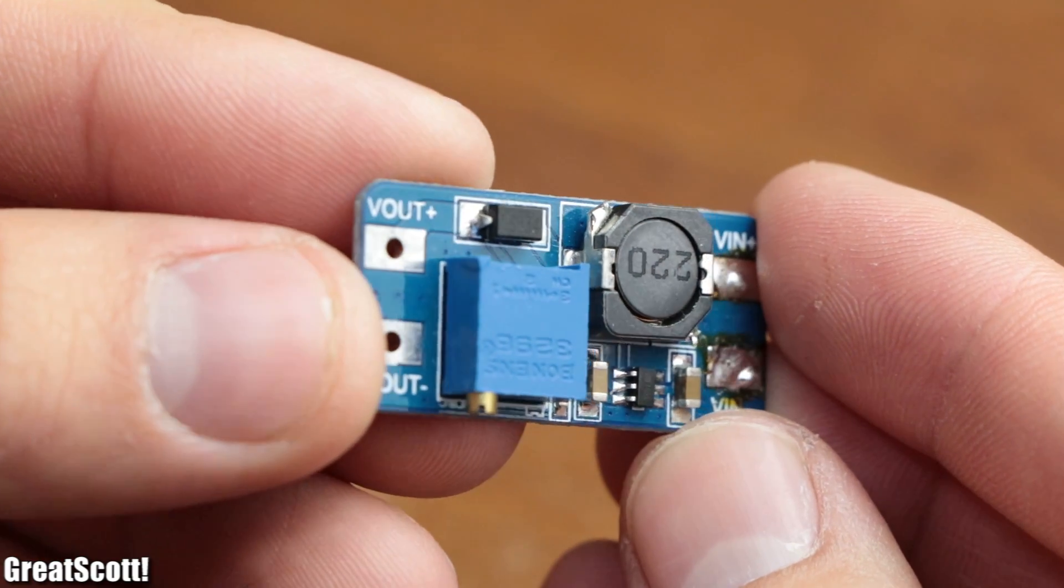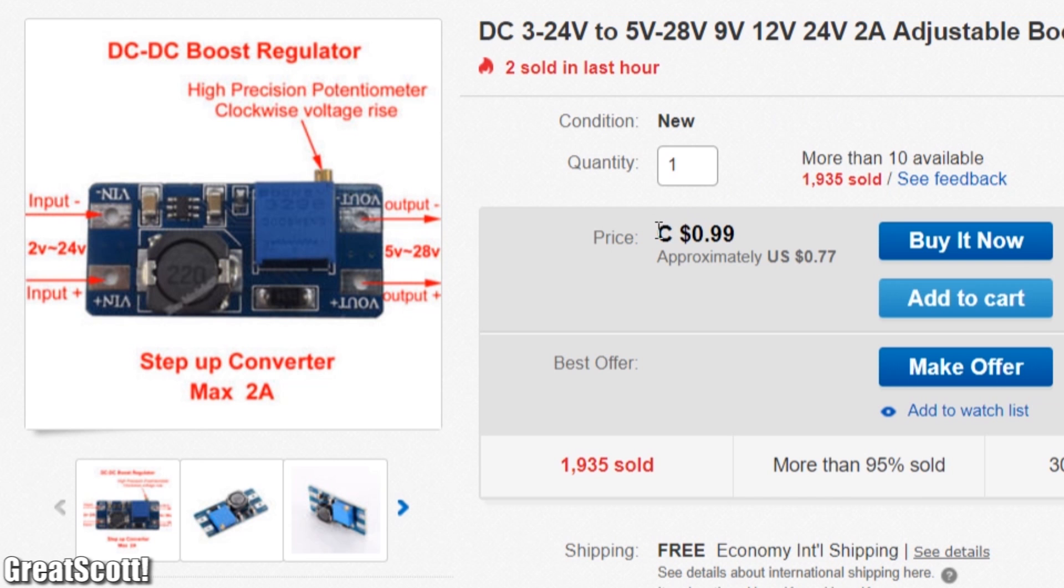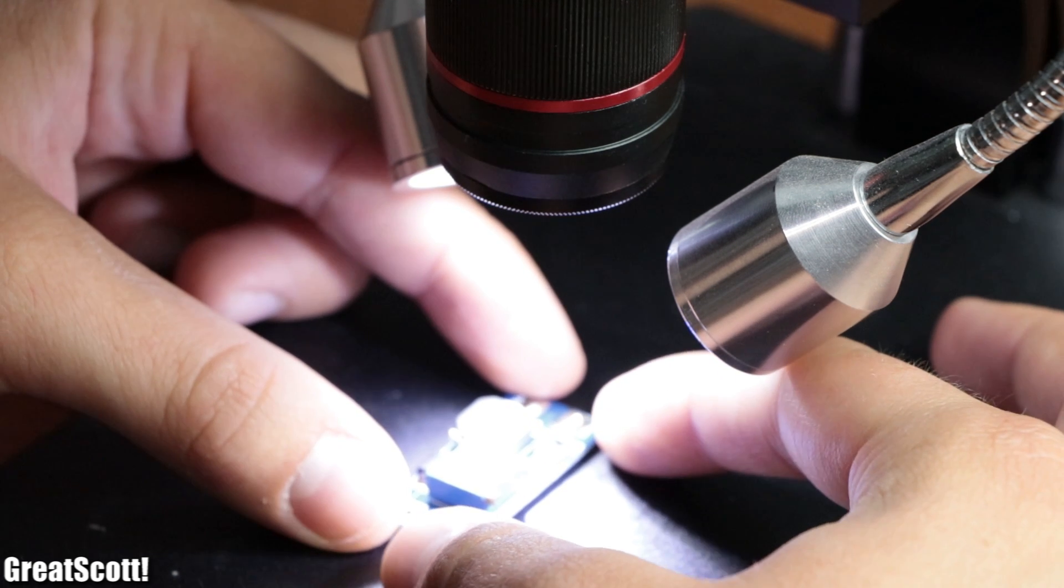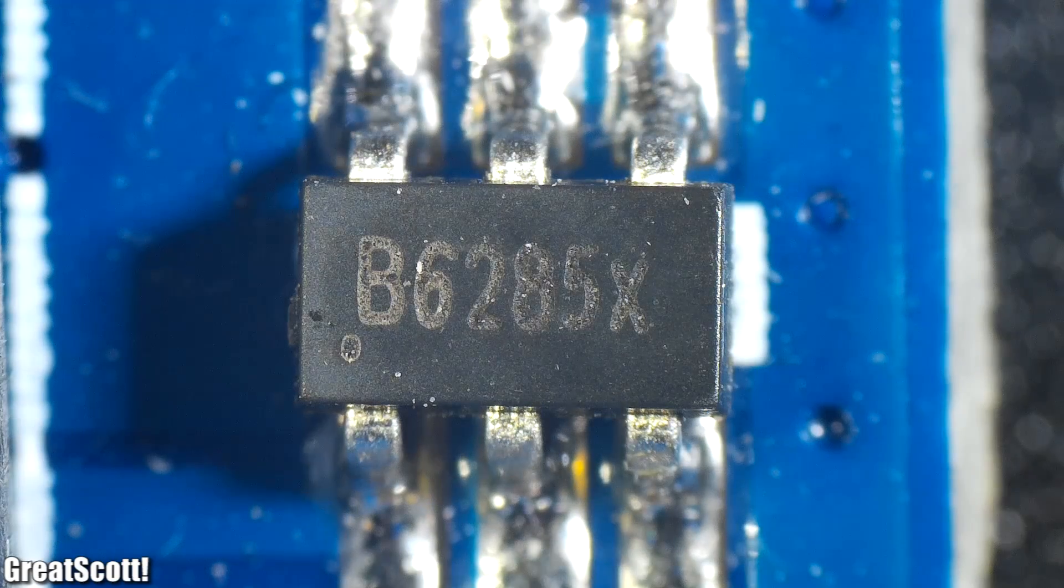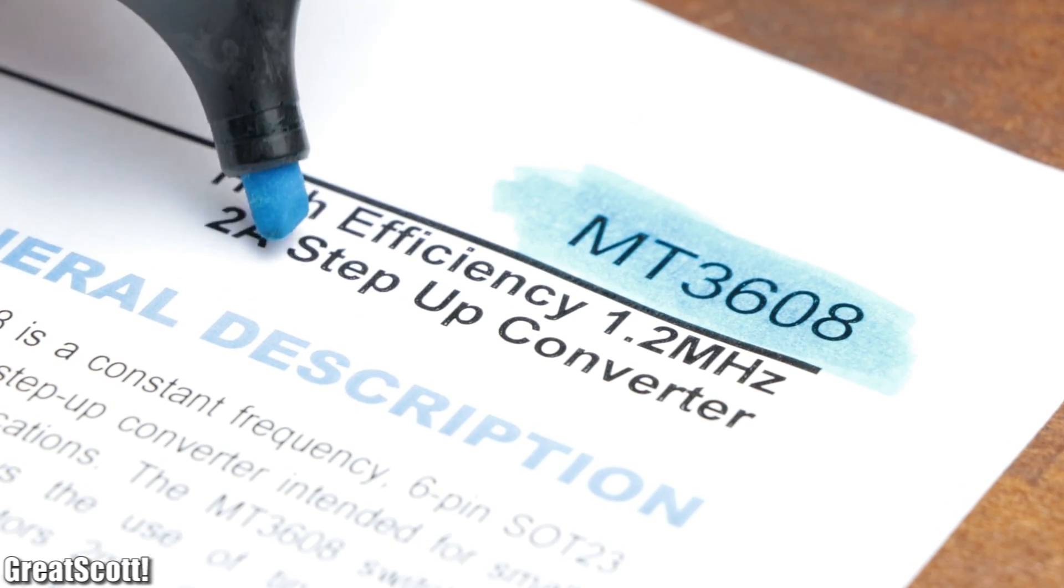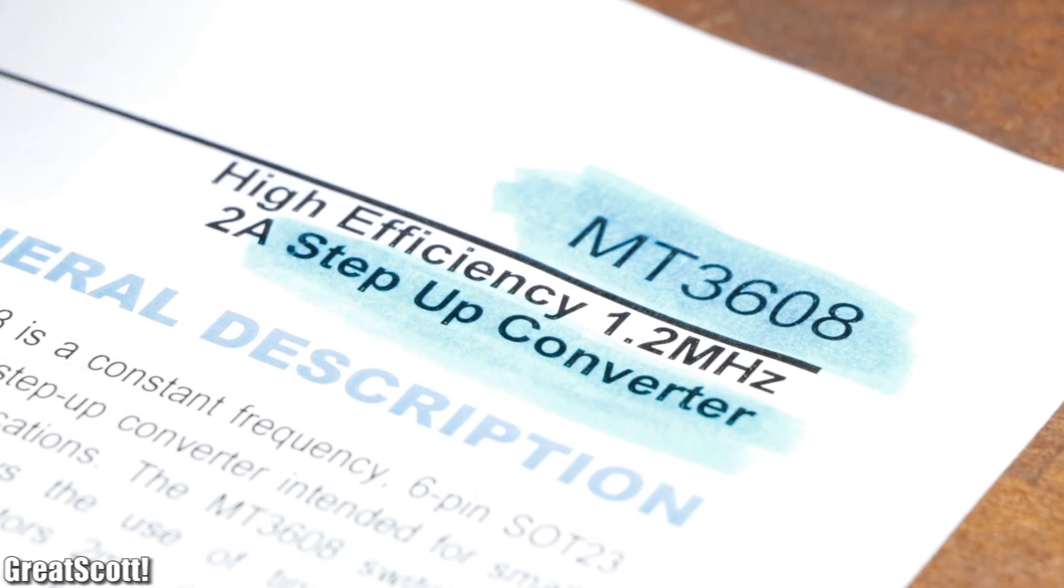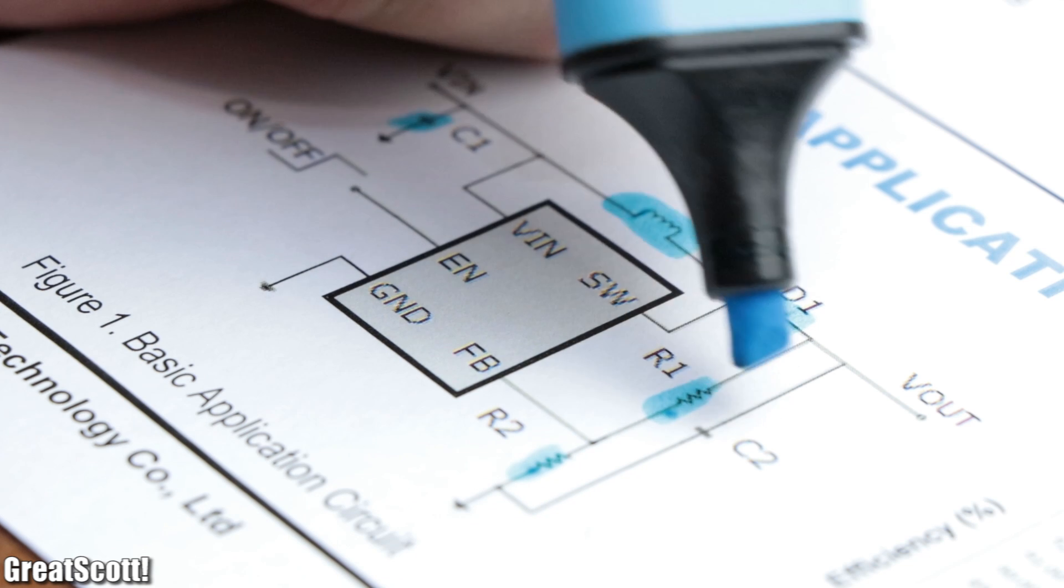To change that, let's have a closer look at this pre-made boost converter circuit that you can get for cheap on eBay. If we inspect the main IC under the microscope, then we can read B6285, which after a bit of googling turns out to be an MT3608 boost converter IC that only requires a minimum of external components to function properly.